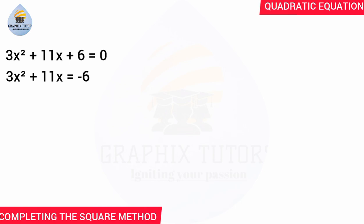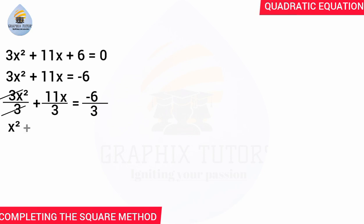After that, we want the x squared to stand alone — we don't want any constants close to x squared. The coefficient of x squared is 3, so we are going to divide through by 3. That gives us 3x squared over 3 plus 11x over 3 equals minus 6 over 3. When we cancel, we are left with x squared plus 11x over 3 equals minus 2.